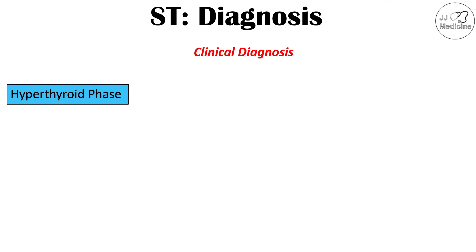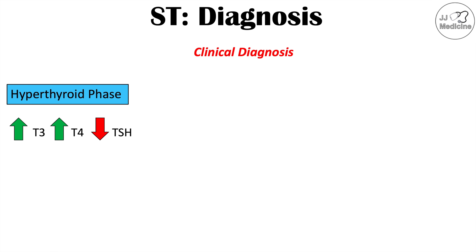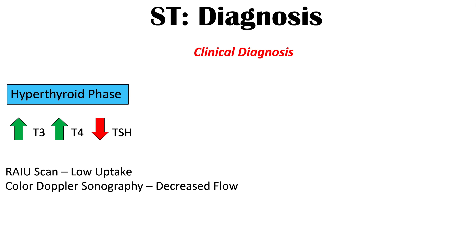In the hyperthyroid phase, there's going to be increased T3 and increased T4 — those thyroid hormones will be elevated — and a decreased TSH or thyroid stimulating hormone. The reason for decreased TSH is that these thyroid hormones negatively inhibit the release of TSH from the pituitary gland. So the dumping of thyroid hormone into the blood negatively inhibits more TSH release. Other investigations in the hyperthyroid phase include a Ryu scan, which will show low uptake, and color Doppler sonography, which shows decreased flow — different from Graves' disease where you'd see increased blood flow. There can also be abnormal liver function tests.